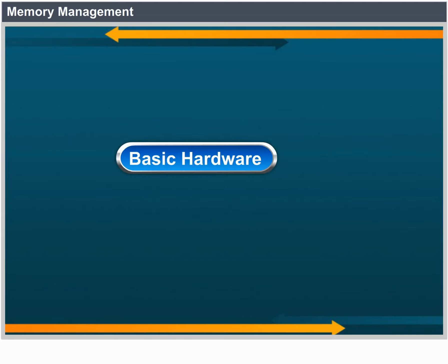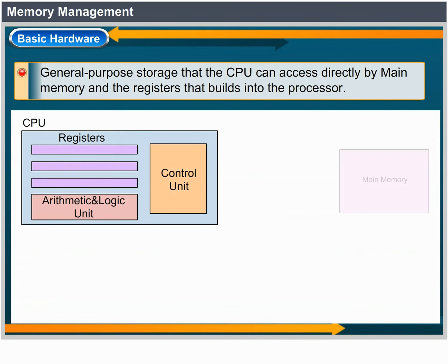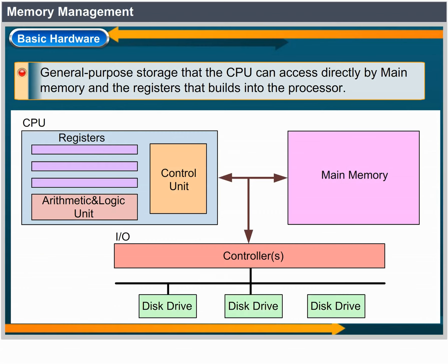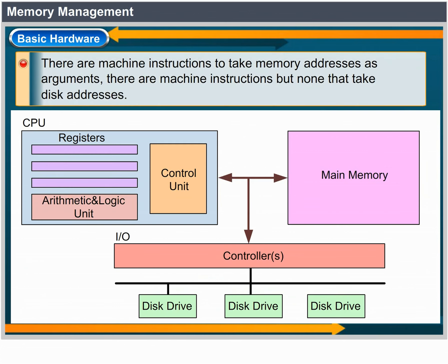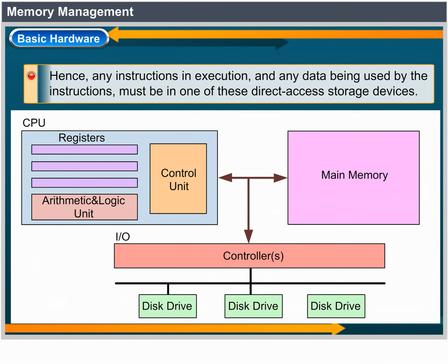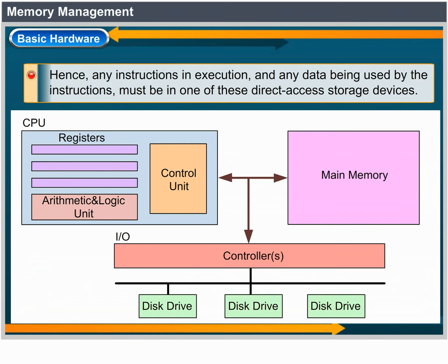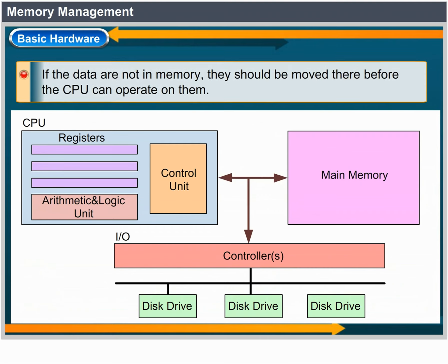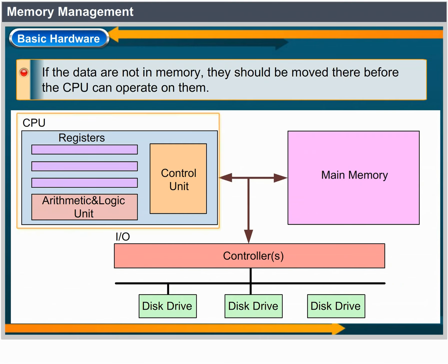Basic hardware. Main memory and the registers built into the processor itself are the only general-purpose storage that the CPU can access directly. There are machine instructions that take memory addresses as arguments but none that take disk addresses. Therefore, any instructions in execution and any data being used by the instructions must be in one of these direct-access storage devices. If the data are not in memory, they must be moved there before the CPU can operate on them.